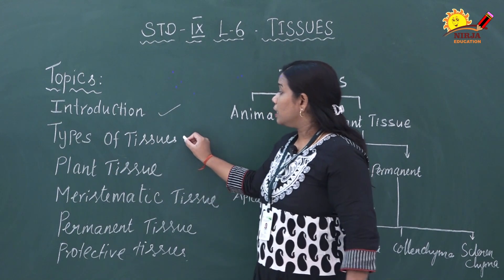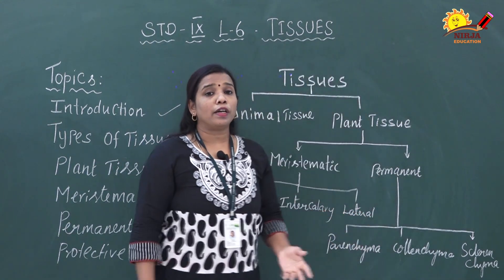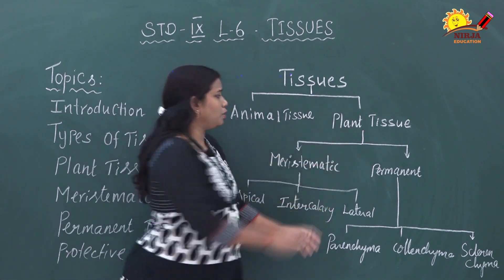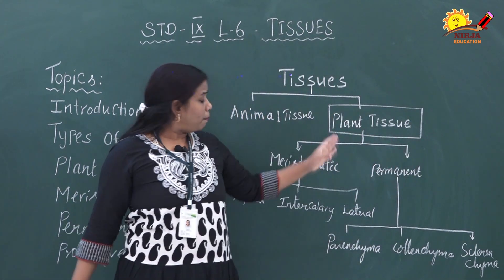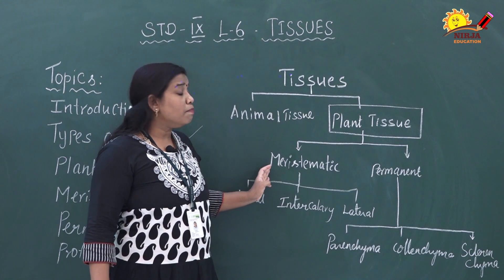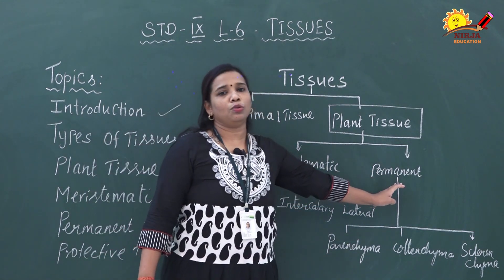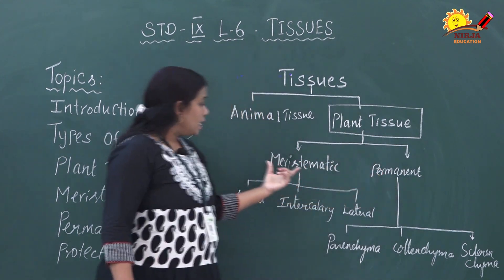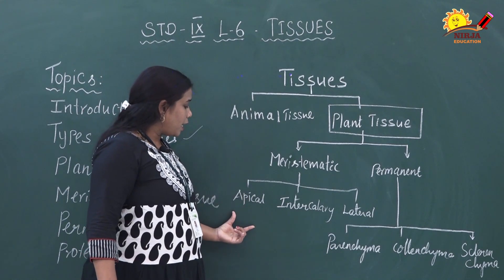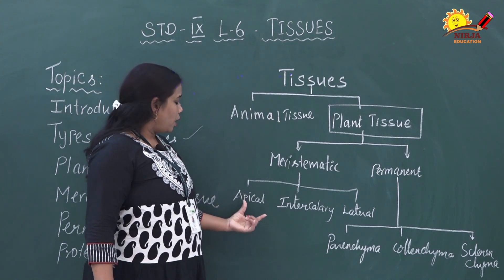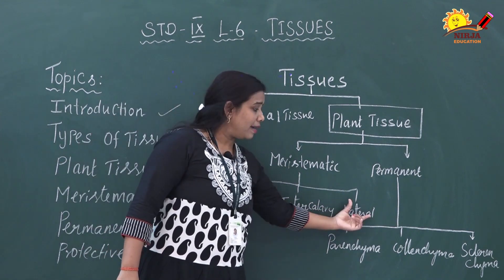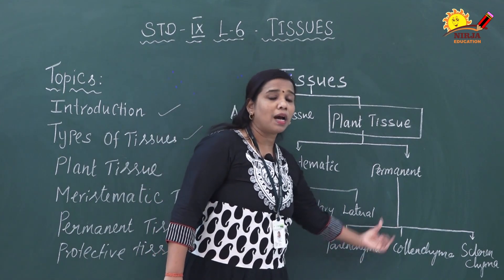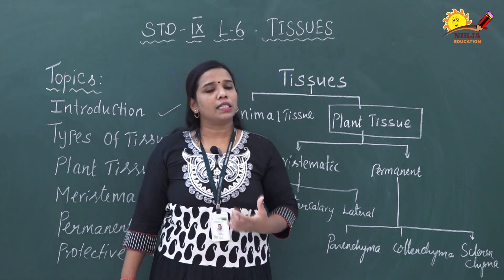Next we will discuss the types of tissues. Tissues are classified into two categories: one is animal tissue and another is plant tissue. In this session we are going to discuss plant tissues. Plant tissues are classified into two types: meristematic tissue and permanent tissue. Meristematic tissues are classified into three types based on location or occurrence: apical meristem, intercalary meristem, and lateral meristem. Permanent tissues are classified into three types: parenchyma, collenchyma, and sclerenchyma. Each of these we will discuss in detail.